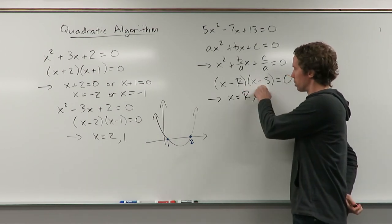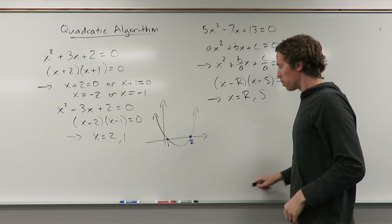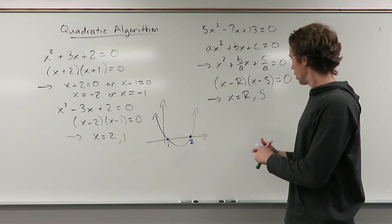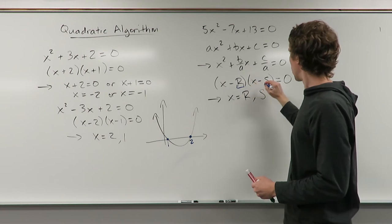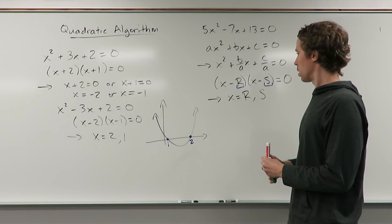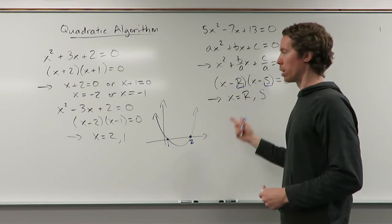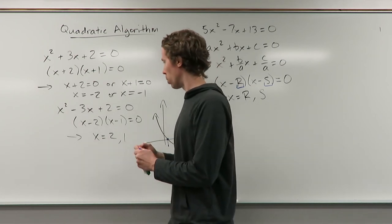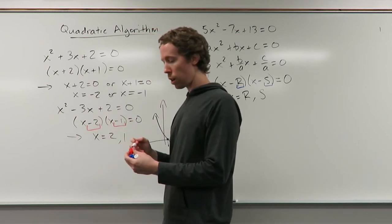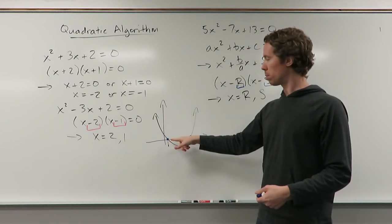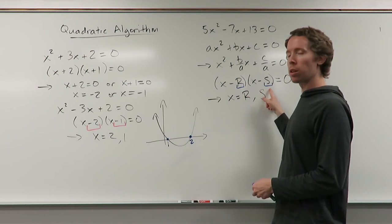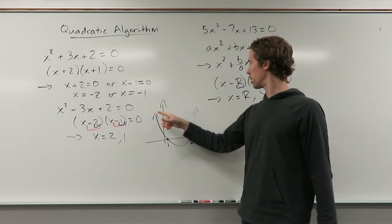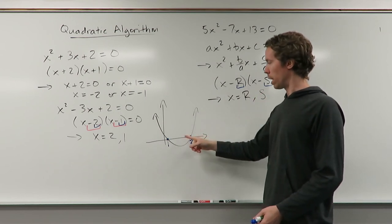So what we're looking for is these two answers to this original equation. Over here the two numbers we were looking for were the numbers that multiplied to positive 2 and added to negative 3 — those were negative 2 and negative 1. But the actual solutions to the problem, the x-intercepts — the r and the s — those are just the 2 and the 1. So we're going to think of this slightly differently because it takes us to the answer a little more quickly.